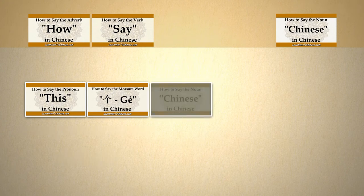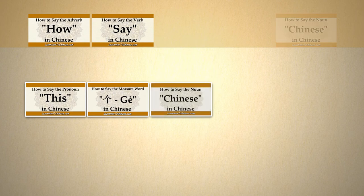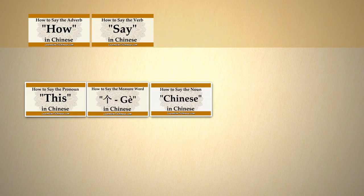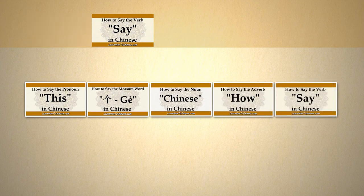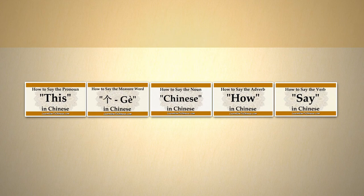Following 个, we add the third word, Chinese. And remember, we don't need in for the word Chinese. And the fourth word we need here is how. And the last word is say. How to say is the same structure as in English.